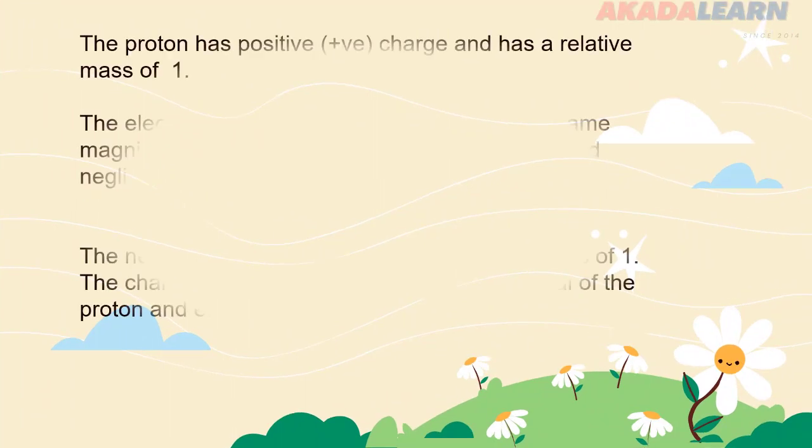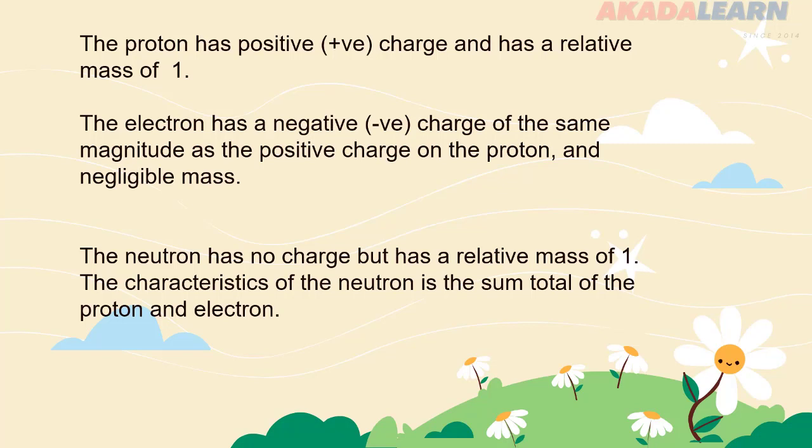The proton has a positive charge and it has a relative mass of one. While the electron has a negative charge of the same magnitude as the positive charge on the proton, and a negligible mass. The neutron, on the other hand, has no charge but has a relative mass of one. The characteristics of the neutron is the sum total of that of the proton and the electron.